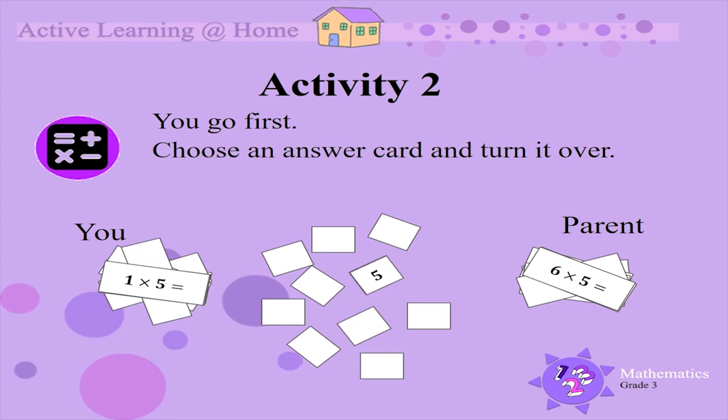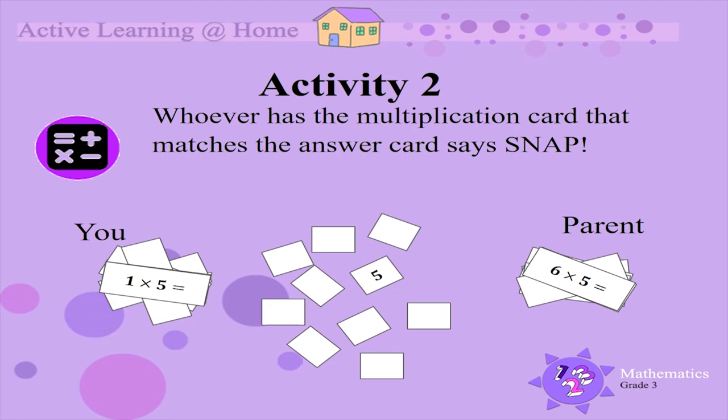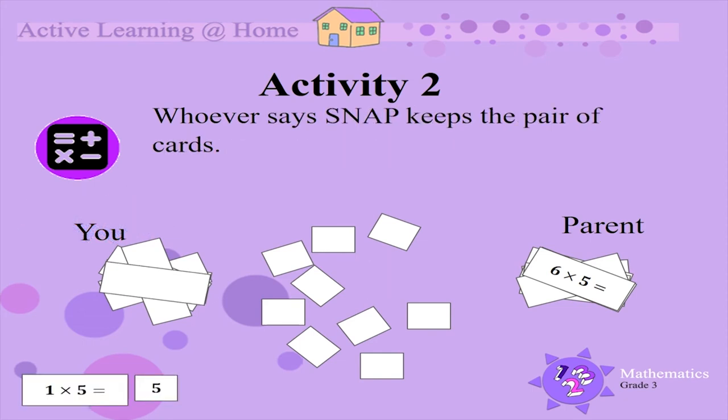5. Whoever has the multiplication card that matches the answer card says SNAP. 1 x 5 is 5. So shout out SNAP!